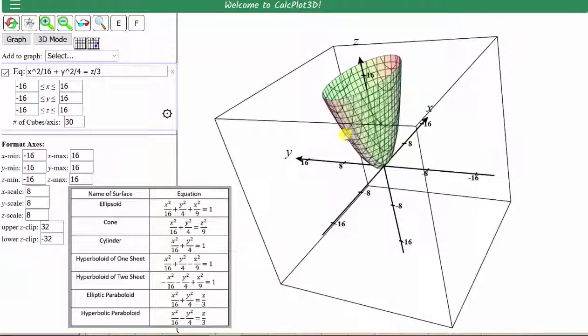And our last quadric surface is the hyperbolic paraboloid. This is given by the equation x squared divided by 16 minus y squared divided by 4 equals z divided by 3.